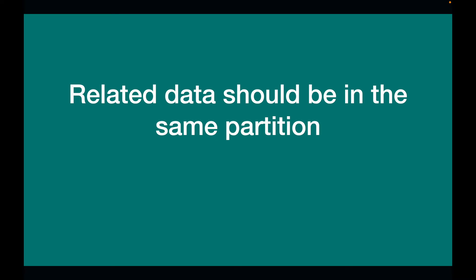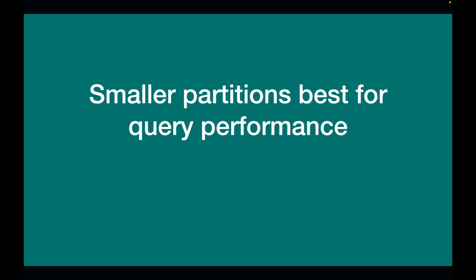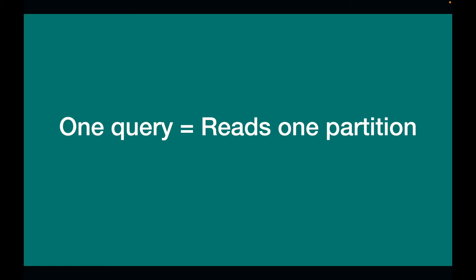You get to define what your partition is going to be and what kind of data is grouped together in the same partition. Smaller partitions are best for query performance — you want to keep partitions small so that read queries complete very quickly. Ideally, you want one query to read from one partition only; if you design your schema that way, you get maximum read performance. Partition is the most atomic unit in Cassandra, so each read query should touch only one partition if possible. When read queries have to scan multiple partitions, the operation gets slower and slower.